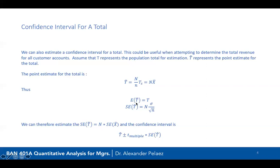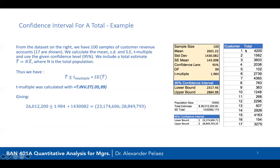The expected value of this total should equal the actual total, and the standard error of the total is the total number of items times the standard deviation divided by the square root of n. We can estimate the standard error of the total as N times the standard error of x-bar, since that's what we computed before. Therefore, T-hat plus or minus the t-multiple times the standard error of the total gives our confidence interval.